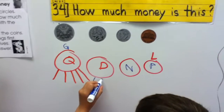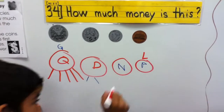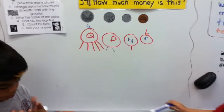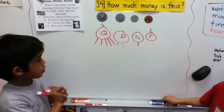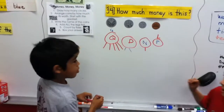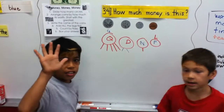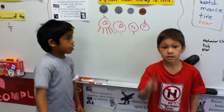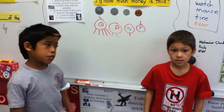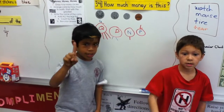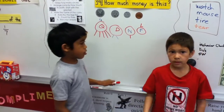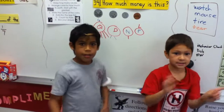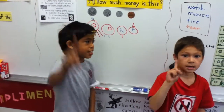Dime has two legs. Nickel has one leg. Quarter has five legs, dime has two legs, nickel has one leg. Baby penny doesn't have legs — it's worth one cent.